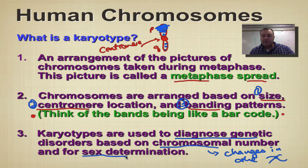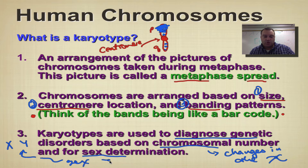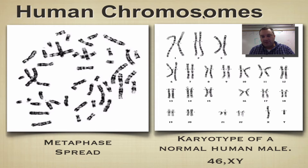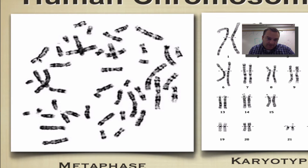We're also going to be able to use a karyotype for sex determination, because you can see the X chromosome and the Y chromosome — those are your sex chromosomes. This over here is a metaphase spread. As you can see, the chromosomes are distinct and spread out so that you can cut them out and tape them over on the karyotype. Notice where it's pinched in — that's the centromere location. You can see some thick bands and some light bands, and we use all of that to arrange our chromosomes.